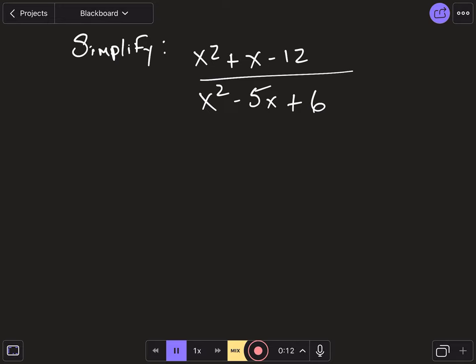So if it helps, let's put a 1 in front of that x, so we know there's always a 1 there. Now, what we want to do is get something that multiplies to negative 12 and adds to 1. And so first, let's deal with the x's.